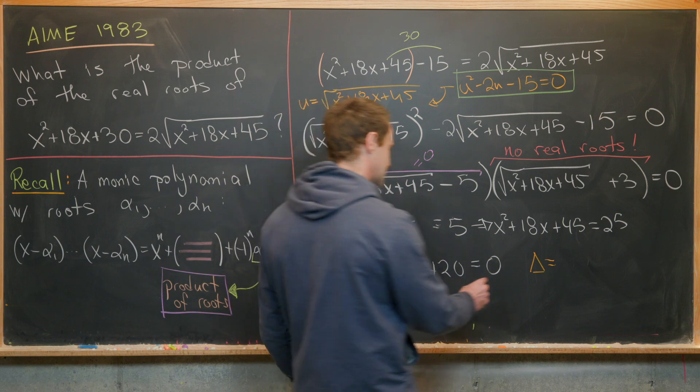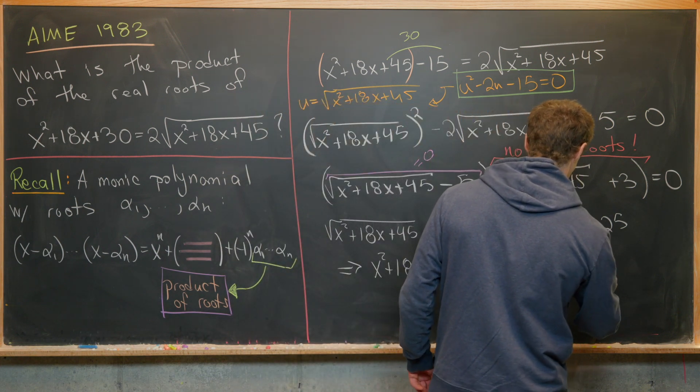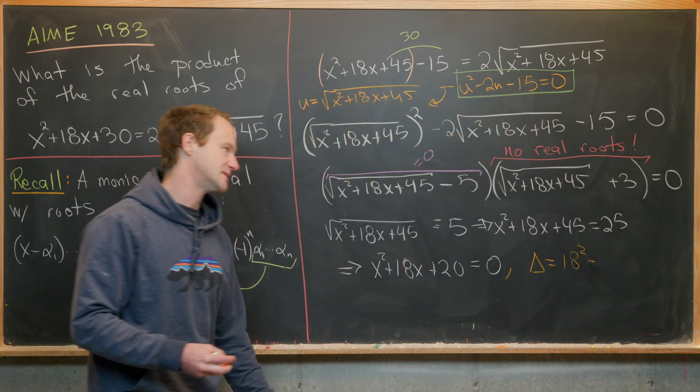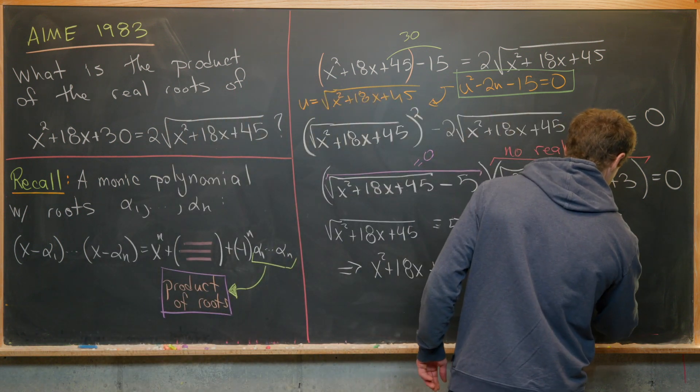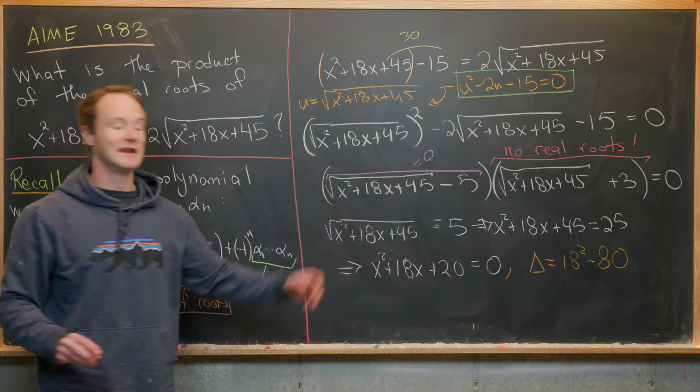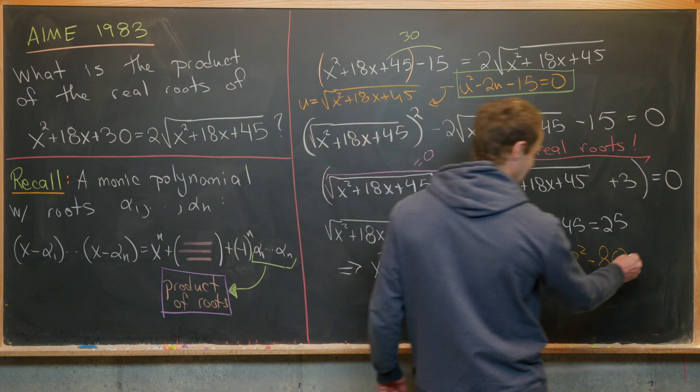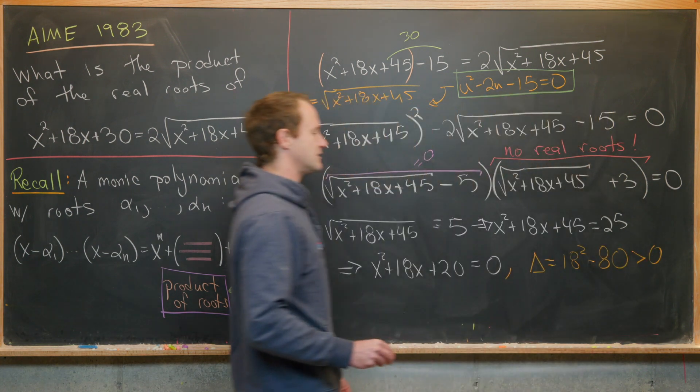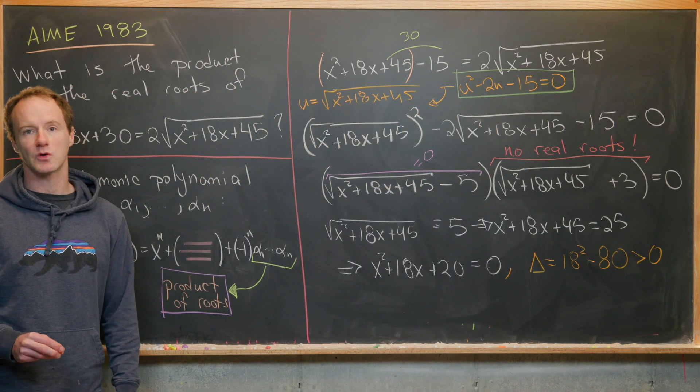Here we have Δ = b² = 18² - 4ac, so that's minus 80. I don't even really need to calculate that; I can tell that is strictly bigger than zero, meaning we have two real roots.